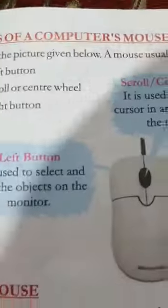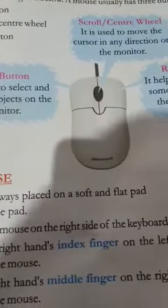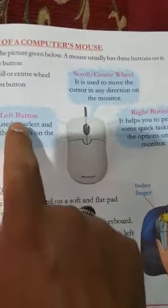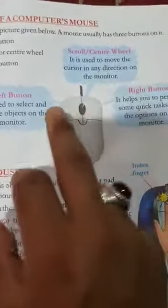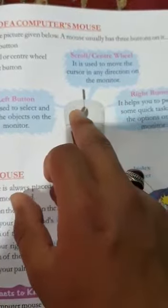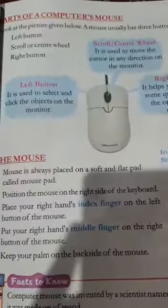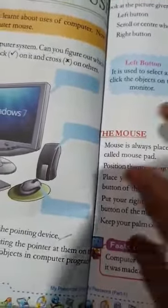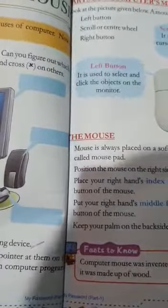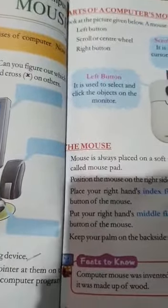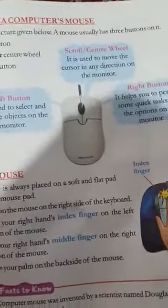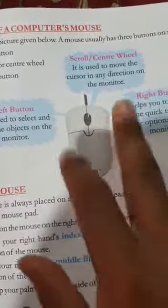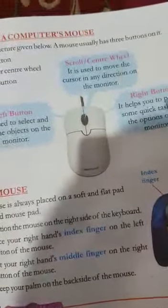The computer mouse has some buttons. The mouse has three main buttons: the left button, the scroll button, and the right button. The scroll button is in the middle. The left button is used to click and select things, such as clicking the start button on the computer.